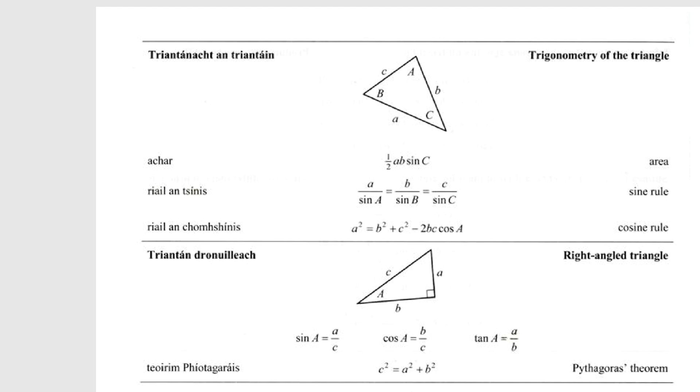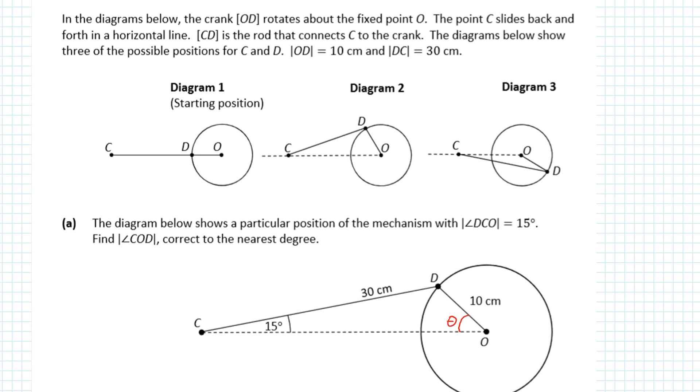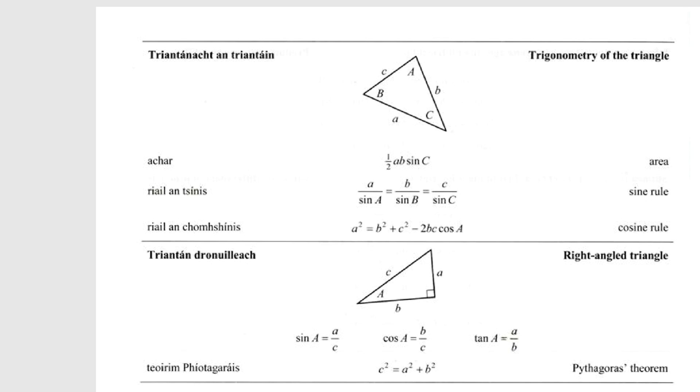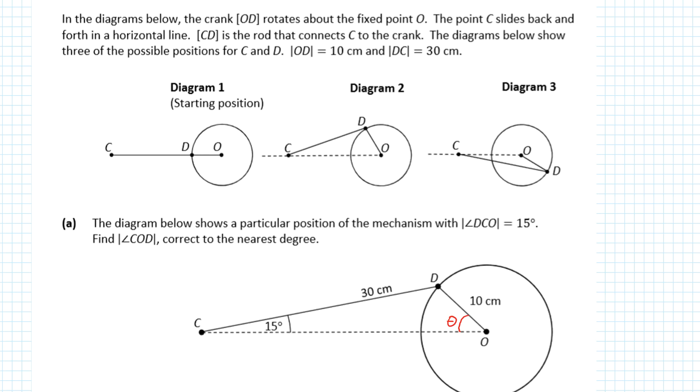Are we using area? No, because the question doesn't reference area. So we're using sine rule or cosine rule. I tell my students, by default, check the sine rule first. How do you check? Do you have a pair - a side and its opposite angle? If you have a side and its opposite angle, chances are you're going to use the sine rule.